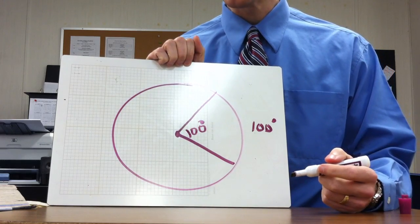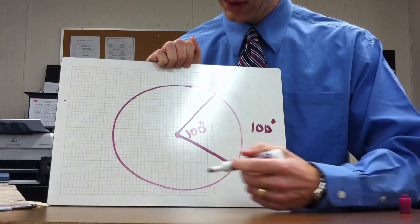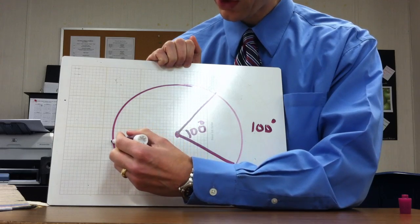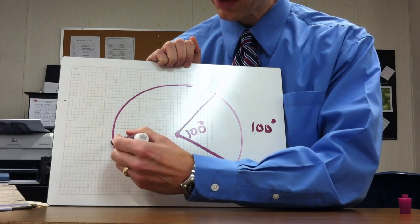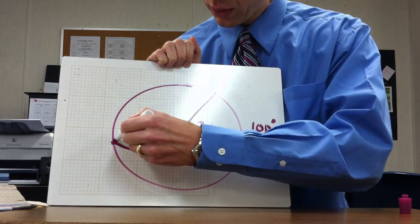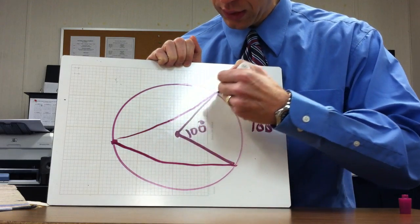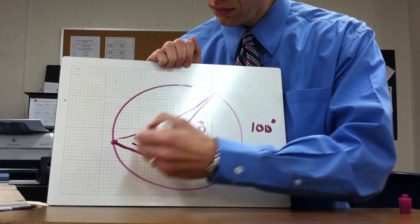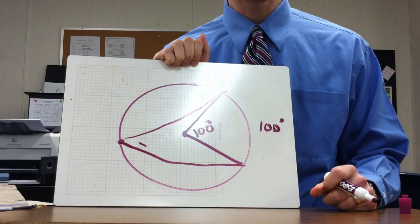Now we're going to have what's called an inscribed angle. An inscribed angle is an angle whose vertex is on the circle, and when you extend it out, its sides contain chords.